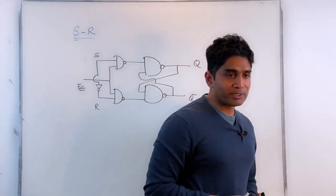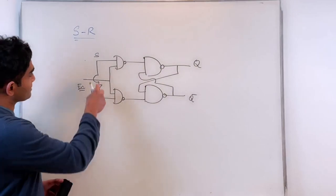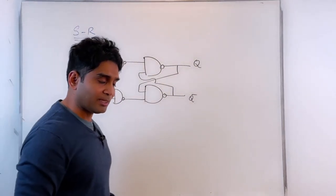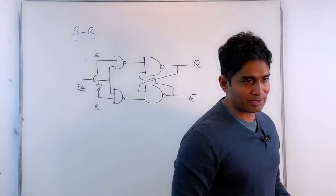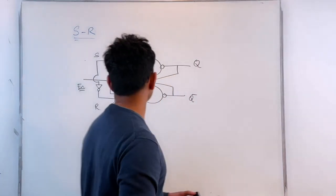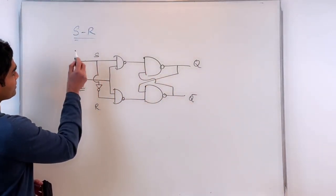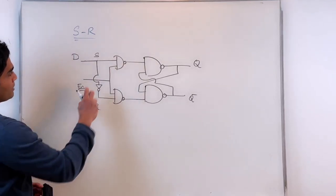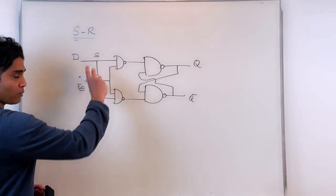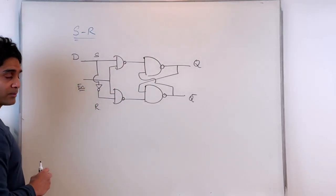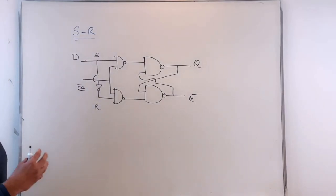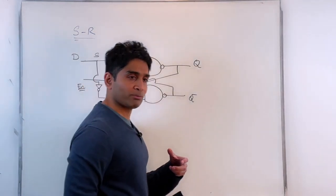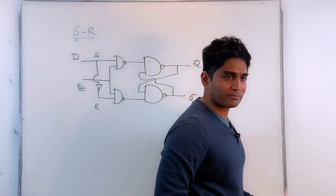By doing this I'm letting S and R not be equal to each other at any given instance of time, so I'm now working with a single input which I'll call D. Since S and R are never equal, I have successfully overcome the forbidden state.